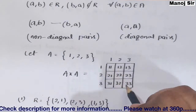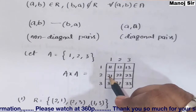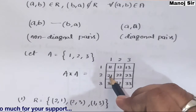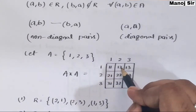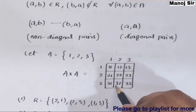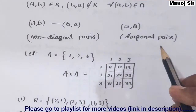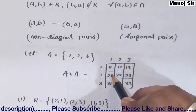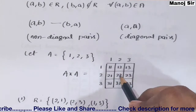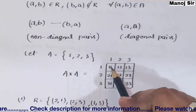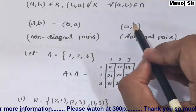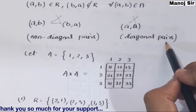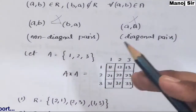Apart from the diagonal pairs, if we select the non-diagonal pair (2,1), its symmetric pair is (1,2); symmetric pair of (3,1) is (1,3); symmetric pair of (3,2) is (2,3). In an asymmetric relation, symmetric pairs should not be present, and diagonal elements should also be absent — put a cross on the diagonal pairs.